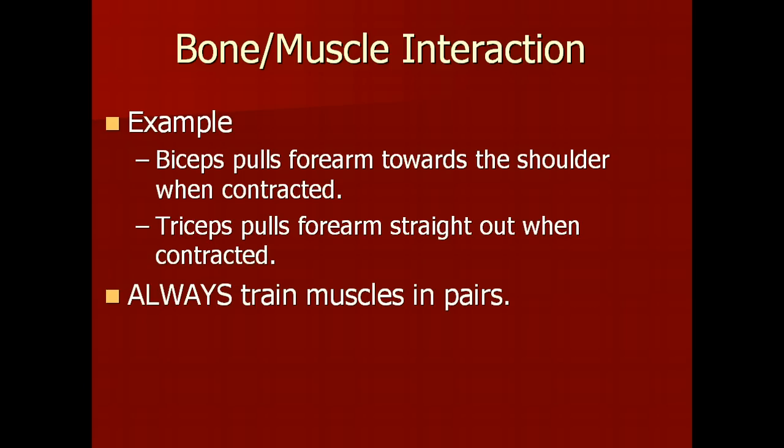Your bicep pulls your forearm towards your shoulder when contracted, and the tricep pulls the forearm straight out when contracted. It's very important to train your muscles in pairs because if you train your bicep but don't train your tricep, over time the stronger bicep will contract more and the tricep will not be strong enough to extend the joint back to normal, causing a bend in your elbow joint.